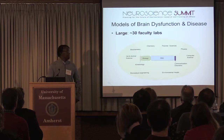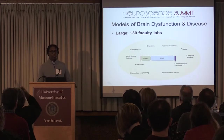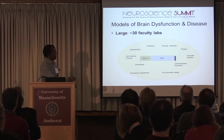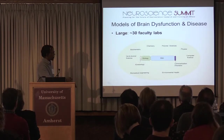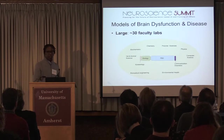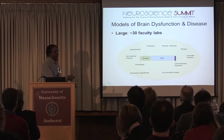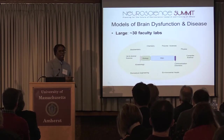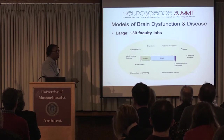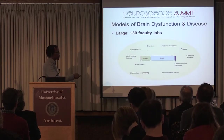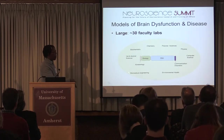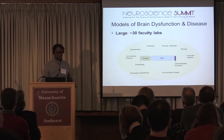What are some characteristics of the brain dysfunction and disease community here at UMass Amherst? First, it's fairly large — about 30 core faculty labs, mostly in psychological and brain sciences and biology, but also in kinesiology and communication disorders. These core faculty either have existing collaborations or see natural opportunities for collaborations with faculty in other departments such as chemistry, polymer sciences, physics, computer sciences, environmental health, biomedical engineering, vet and animal sciences, and biochemistry.